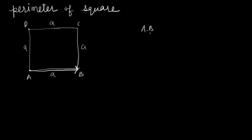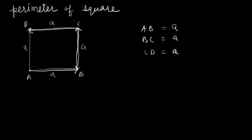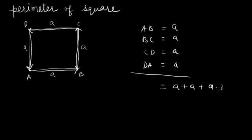Starting from point A and moving to point B, this distance is equal to the length of the side, which is 'a'. Again, from B to C this is the same distance 'a', and similarly going from C to D which is again 'a', and then moving from D back to point A which is 'a'. The perimeter is the sum of all the sides, which is a + a + a + a. We can also write this as 4a. So the formula to find the perimeter of any square is 4a.